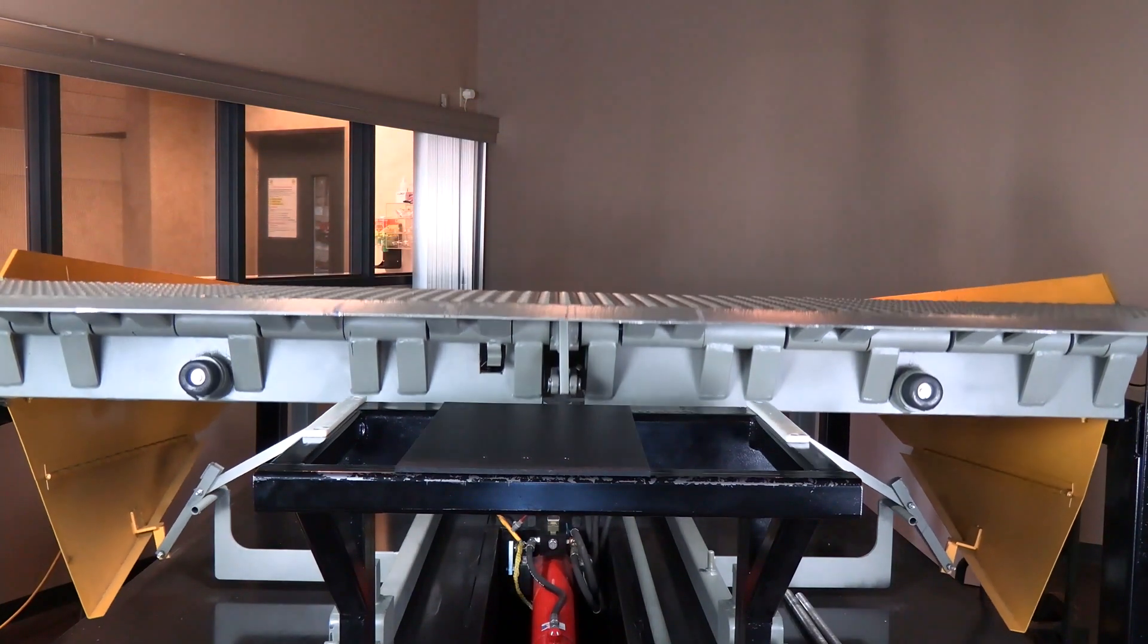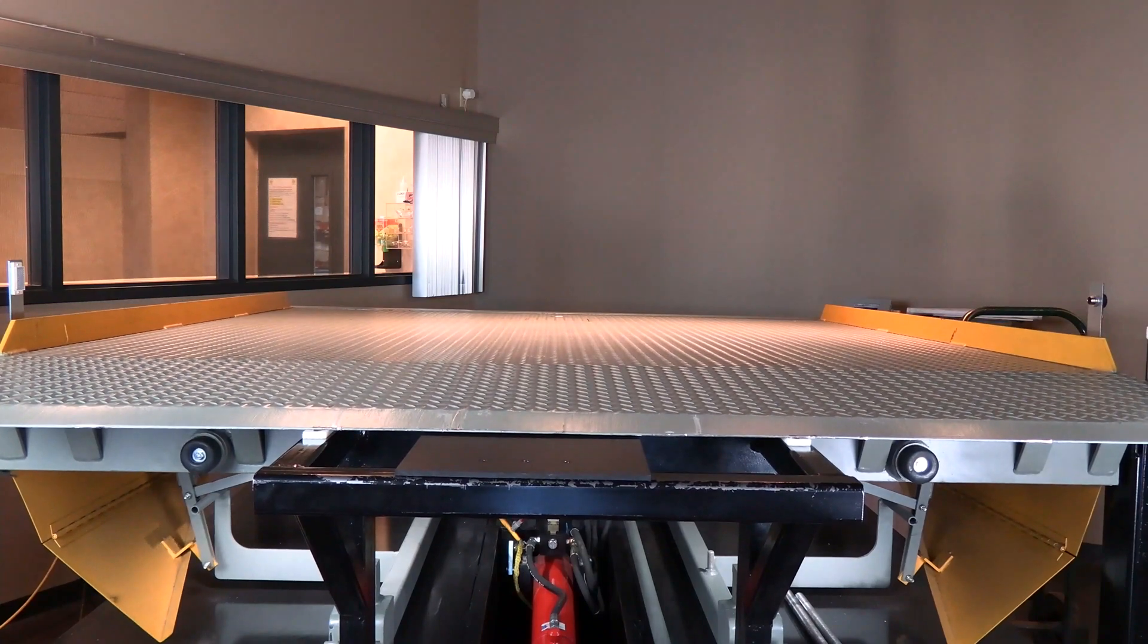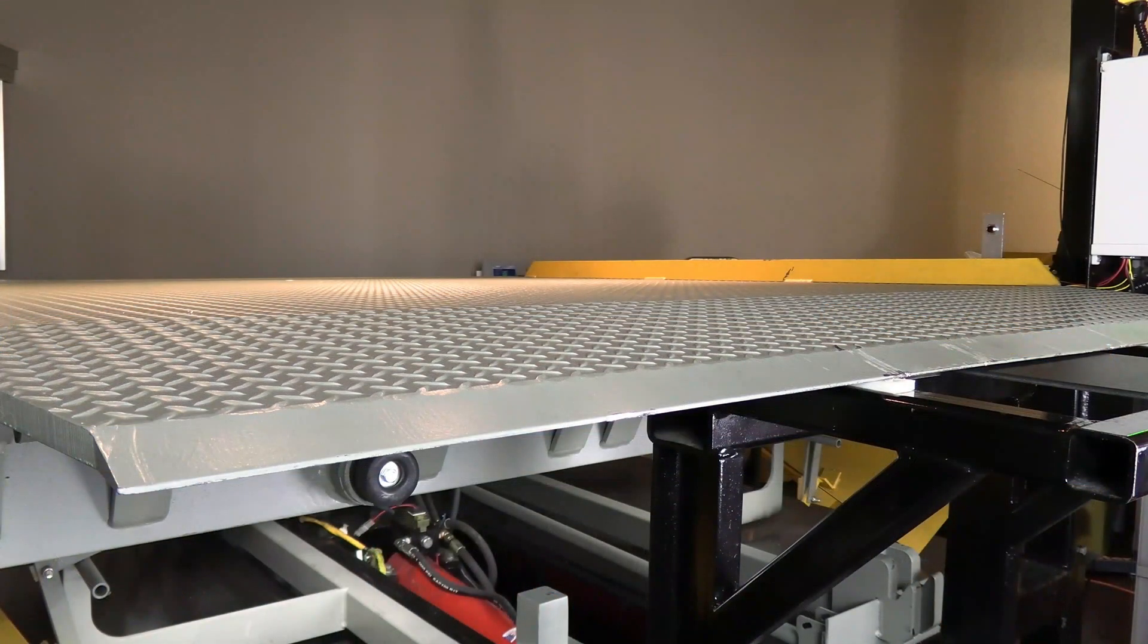The lip cylinder recesses away from the lip after the leveler has rested on the bed of the truck, preventing wear on the seals while the leveler moves up and down with the trailer.